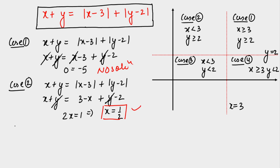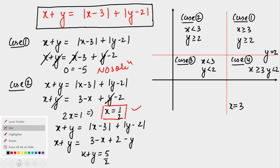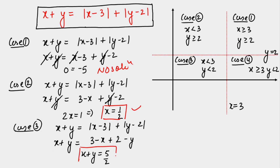Case 3: x < 3 and y < 2. Both moduli open with negative signs, so the equation becomes x + y = (3−x) + (2−y). Taking x and y to the left side gives 2x + 2y = 5, i.e., x + y = 5/2. A solution exists in this case as well.